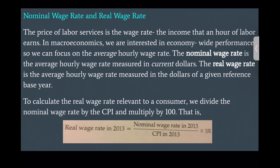Nominal wage rate and real wage rate. The price of labor services is the wage rate — the income that an hour of labor earns. In macroeconomics, we focus on the average hourly wage rate. The nominal wage rate is the average hourly wage rate measured in current dollars. The real wage rate is the average hourly wage rate measured in the dollars of a given reference year. To calculate the real wage rate relevant to a consumer, we divide the nominal wage rate by the CPI and multiply by 100: real wage rate in 2013 equals nominal wage rate in 2013 over CPI in 2013 times 100.